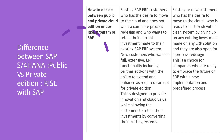Private edition is designed to provide innovation and cloud values while allowing the customer to retain their investment by converting their existing systems. For public edition, existing or new customers who desire to move to the cloud but are ready to start with a fresh or clean system, giving up all existing investment made on any ERP solution, and who are also open to a process redesign, can go for public edition.